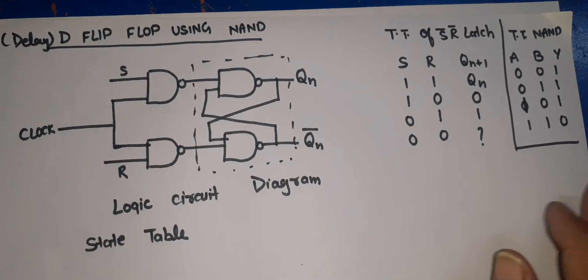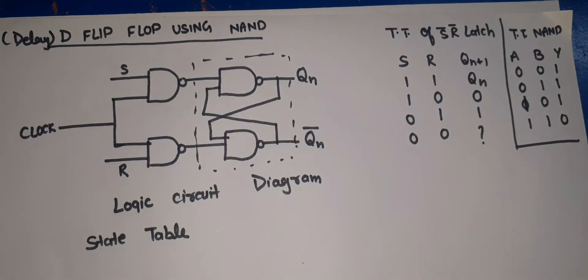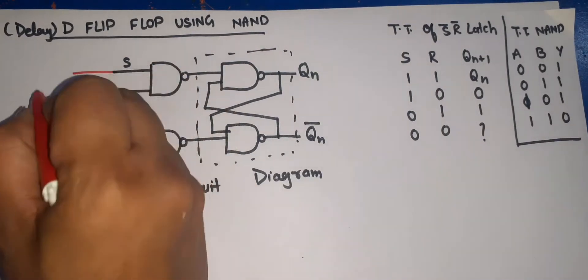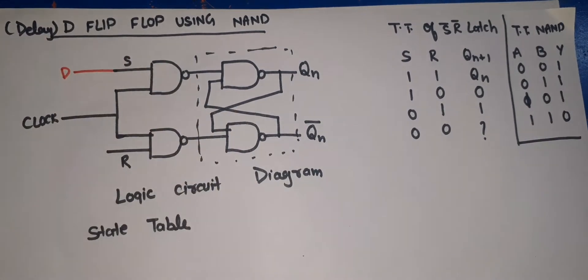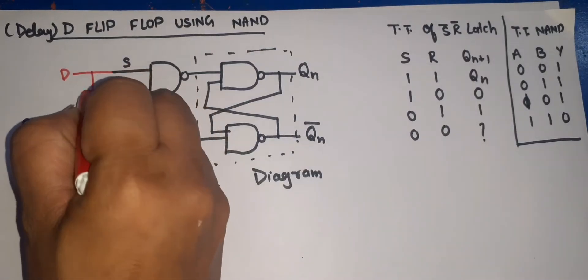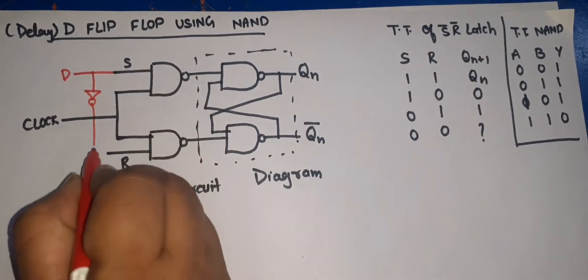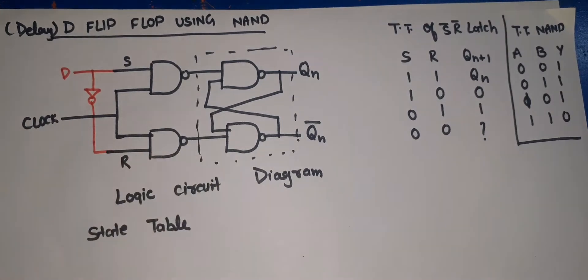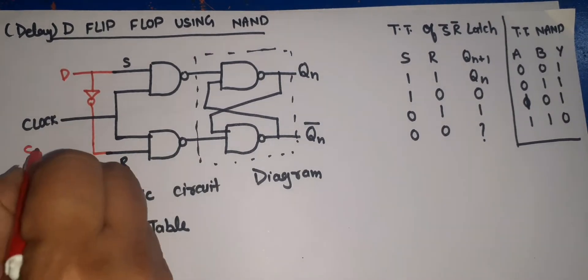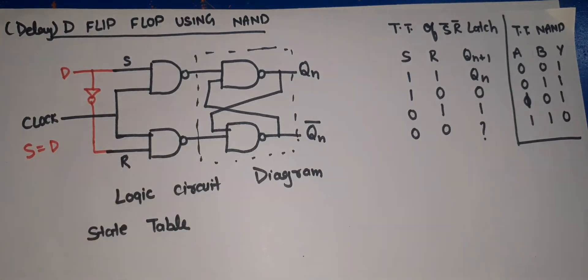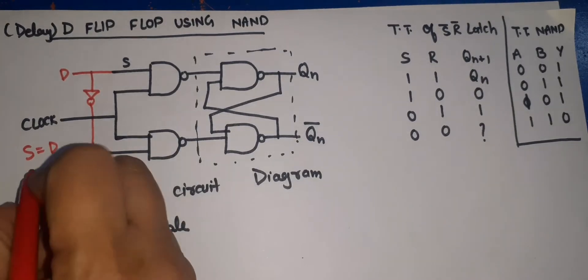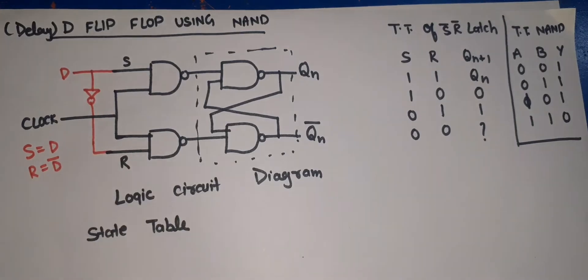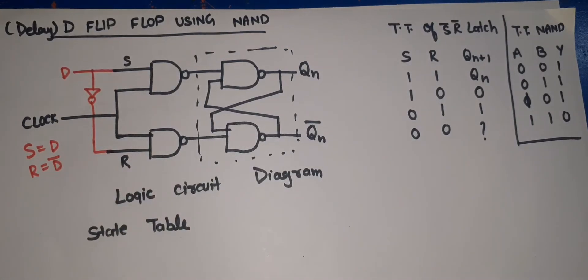So that it will be easy for you to understand. Now, if we have to convert the SR latch into a D flip-flop, what we have to do is apply one input D at S, and we apply this input through a NAND gate. So S is equal to D — the value of S will be the value of D — and R is equal to D-bar, meaning R is just the complement of D, the opposite.